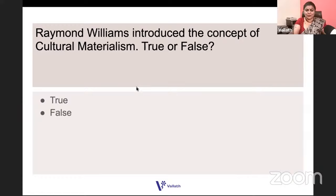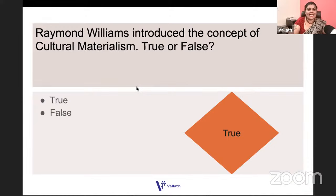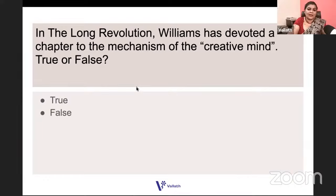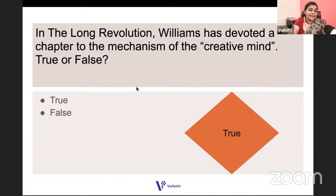True or false: Raymond Williams introduced the concept of cultural materialism. It is true — in Marxism and Literature. True or false: in The Long Revolution, Williams has devoted a chapter to the mechanism of the creative mind. That is also true — check it out on your own; it will do you good in the exam.